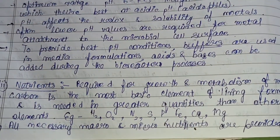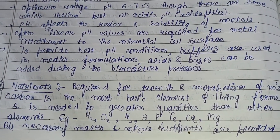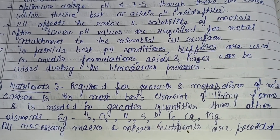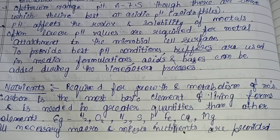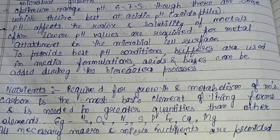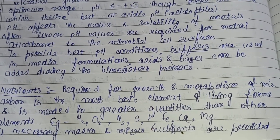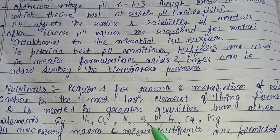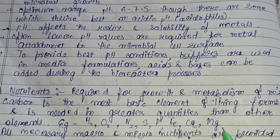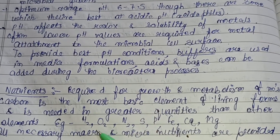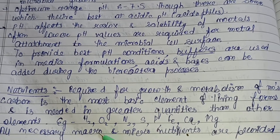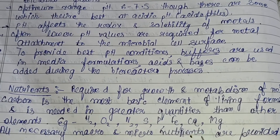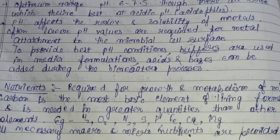Nutrients are required for the growth and metabolism of microorganisms. Carbon is the most basic element of living forms and is needed in greater quantities than any other element. Other nutrients required by microbes include hydrogen, oxygen, nitrogen, sulfur, phosphorus, iron, calcium, and magnesium. All necessary macronutrients required in large quantities and micronutrients required in minute quantities are provided in the reaction media.